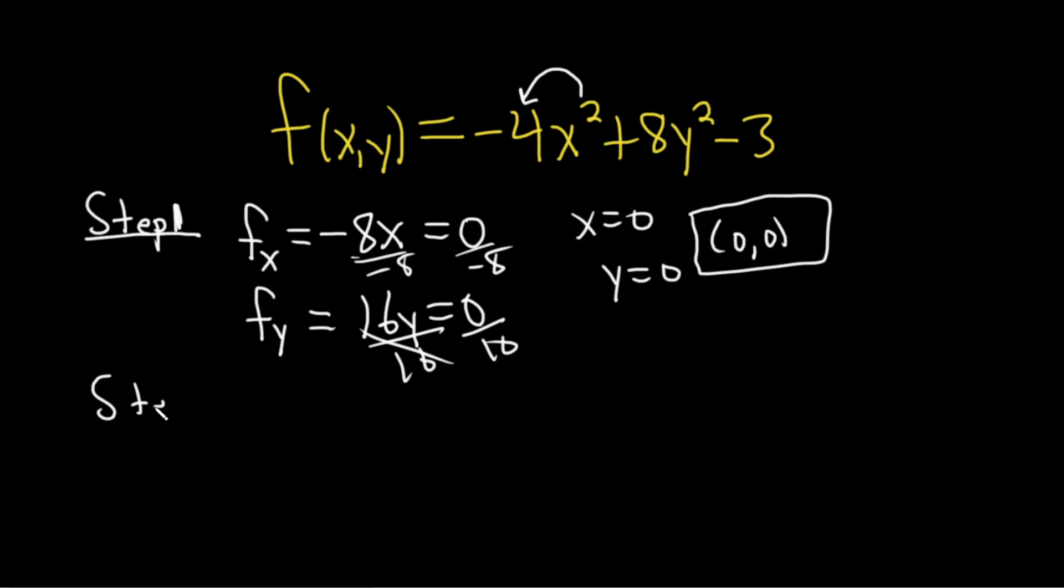Second step in the second derivative test is to compute big D. So big D I'm just going to say at AB just to save ourselves some writing. So all of this is evaluated at AB which this is going to be our AB.